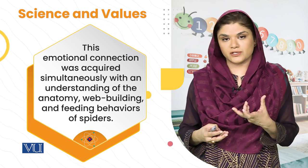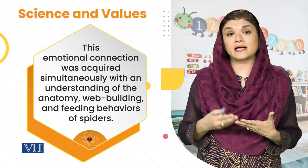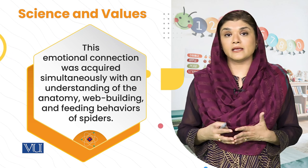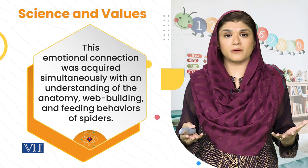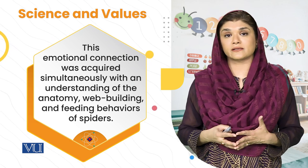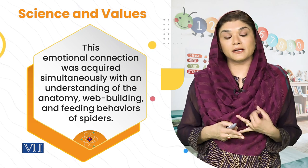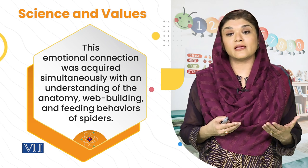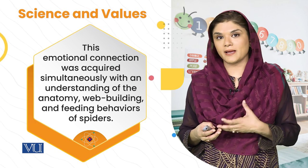When this emotional connection is developed through a book, they don't just read the book passively. For example, the spider is a common animal found in our house. So the child can easily read a book about spiders — about web building, about feeding behavior — because they actually get interested in the spider.